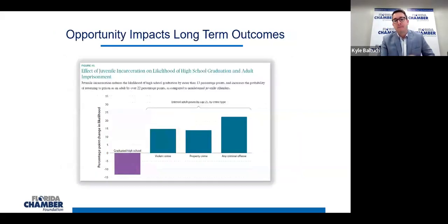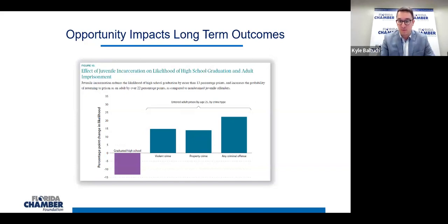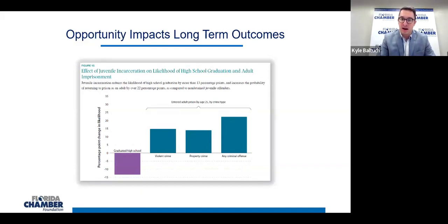What that ends up turning into is long-term challenges for those individuals. If a youth is interacting with the juvenile incarceration system, they are much less likely to graduate from high school, and much more likely to recidivate within their lifetime — through all offenses: violent crimes, property crimes, and any other criminal offense. Crime is typically more prevalent within communities where opportunity does not exist. Where less opportunity exists, crime is more likely to occur. And if an individual, especially a child, interacts with the criminal justice system or crime at a younger age, we know that long-term economic opportunities and outputs are going to be drastically impacted.